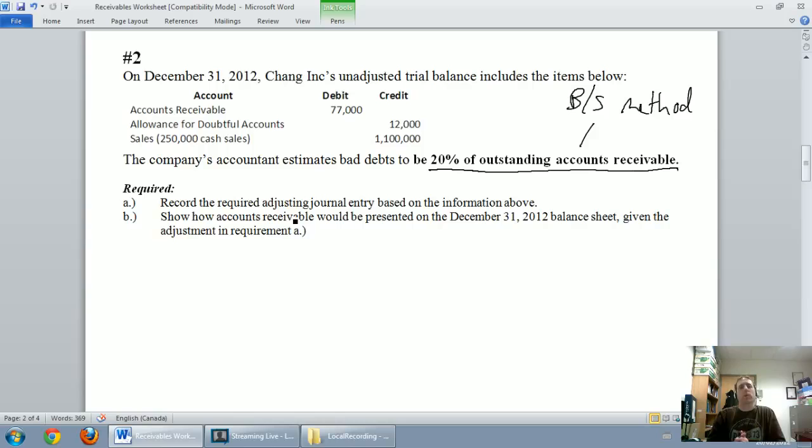So we need to record the adjusting journal entry. Again, remember the purpose of this. At our fiscal year end, we're not sure which customers are going to pay and which aren't. We have to make an estimate because some surely won't pay, and we can do it either basing it on a percentage of sales or a percentage of our accounts receivable. Obviously, the older accounts receivable is more likely to be uncollectable.